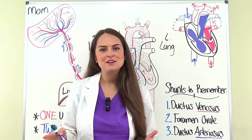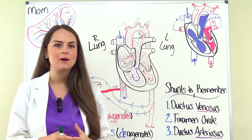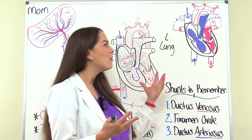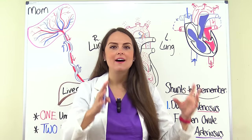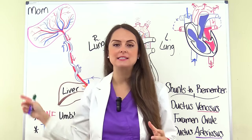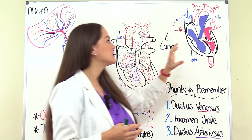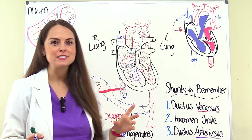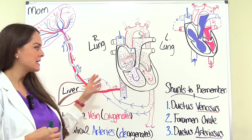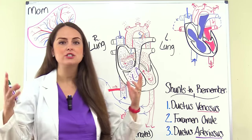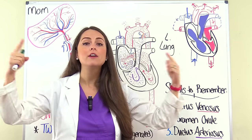To help us understand fetal circulation, we first have to go back and review the normal blood flow of the heart — how blood actually flows through a heart that is outside of the uterus, not depending on a placenta. And we need to know where deoxygenated blood is versus oxygenated blood.